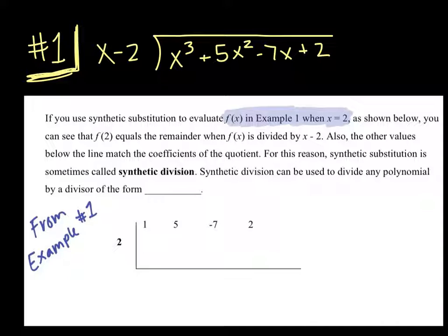We would still set it up the same way. When you're trying to fill the inside of your box, you still pull those coefficients out from the front of your variable. So you would pull the 1, the 5, the negative 7, and the 2. So it goes x cubed, x squared, x, constant.